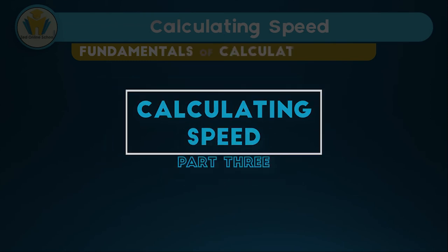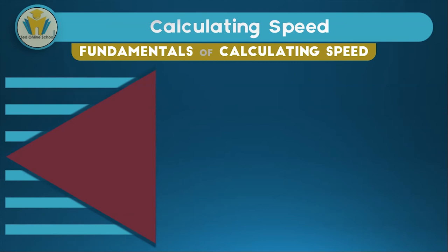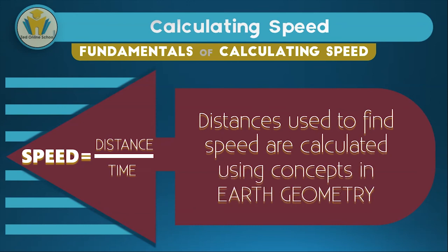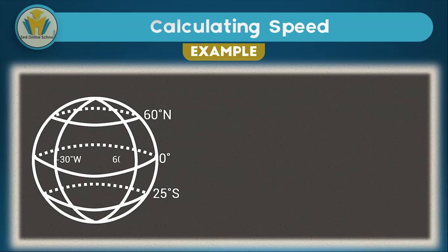Now let's look at how we calculate speed. Under speed we also need to know some fundamental principles. The formula for speed is equal to distance over time. The distances used to find speed are calculated using concepts in earth geometry, so if you haven't looked at the video on how to calculate distances, it's very good to check it out. In this example we have a sphere labeled 60 degrees north, 25 degrees south, zero degrees, and some longitude values.